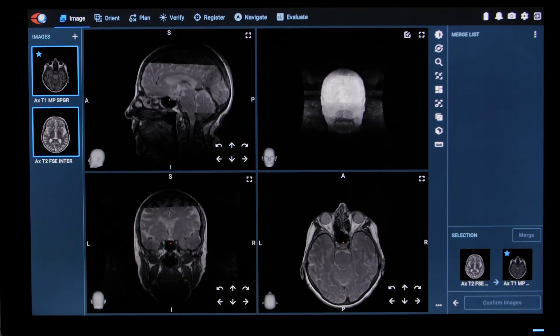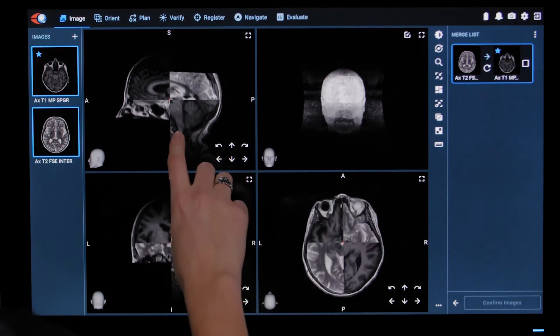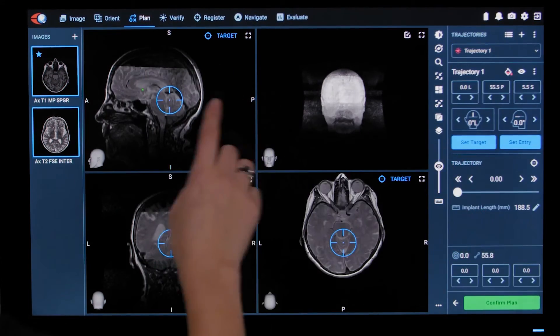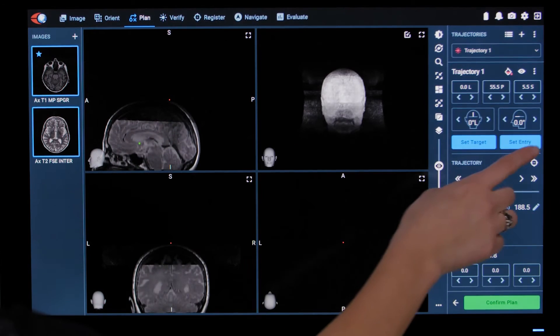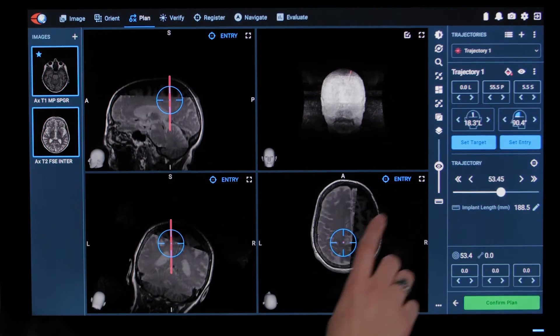MRI and CT images are uploaded preoperatively to plan your trajectories. For DBS cases, you can preoperatively set your ACPC coordinate system to utilize the software's pre-set trajectories for easy planning. Once complete, scroll through each trajectory to verify its placement.